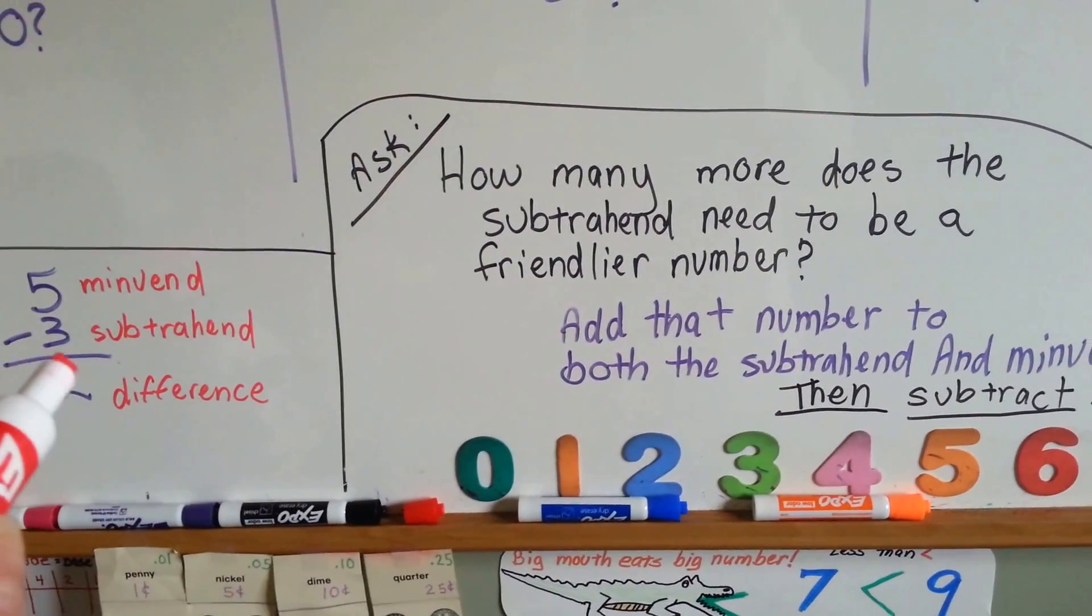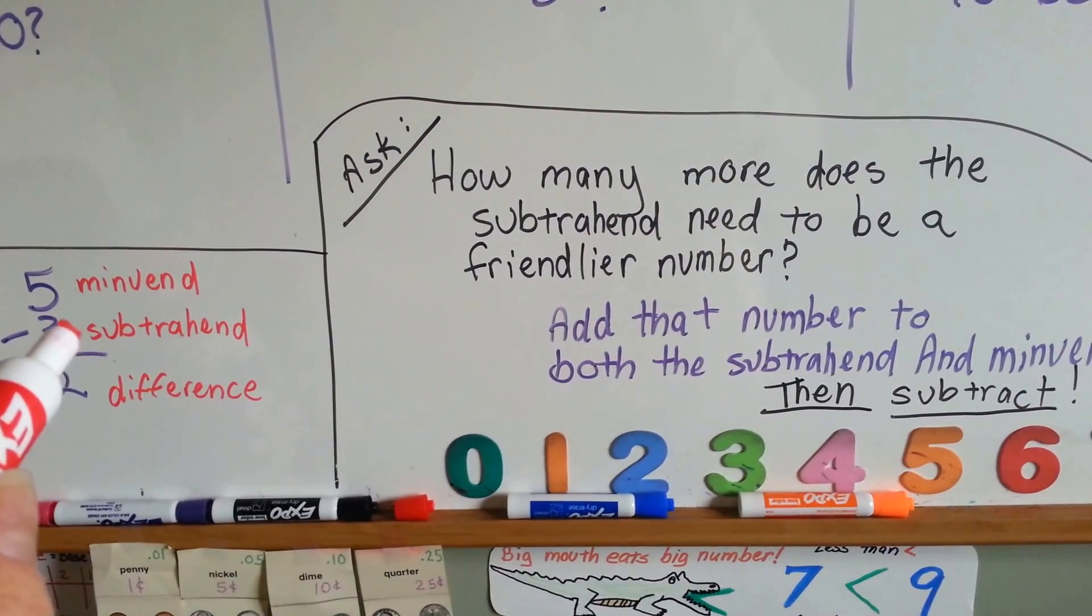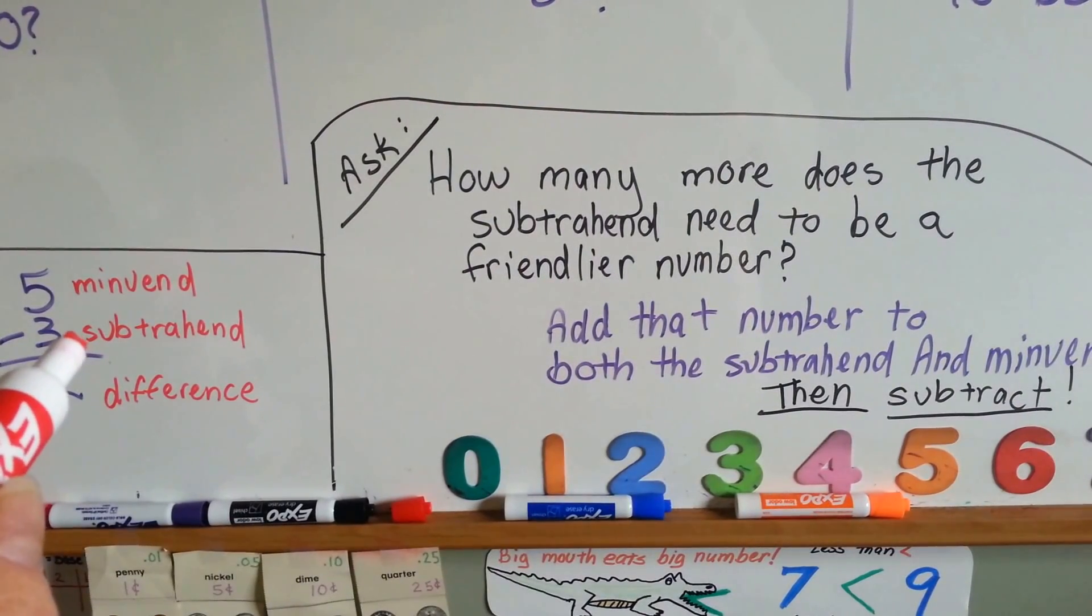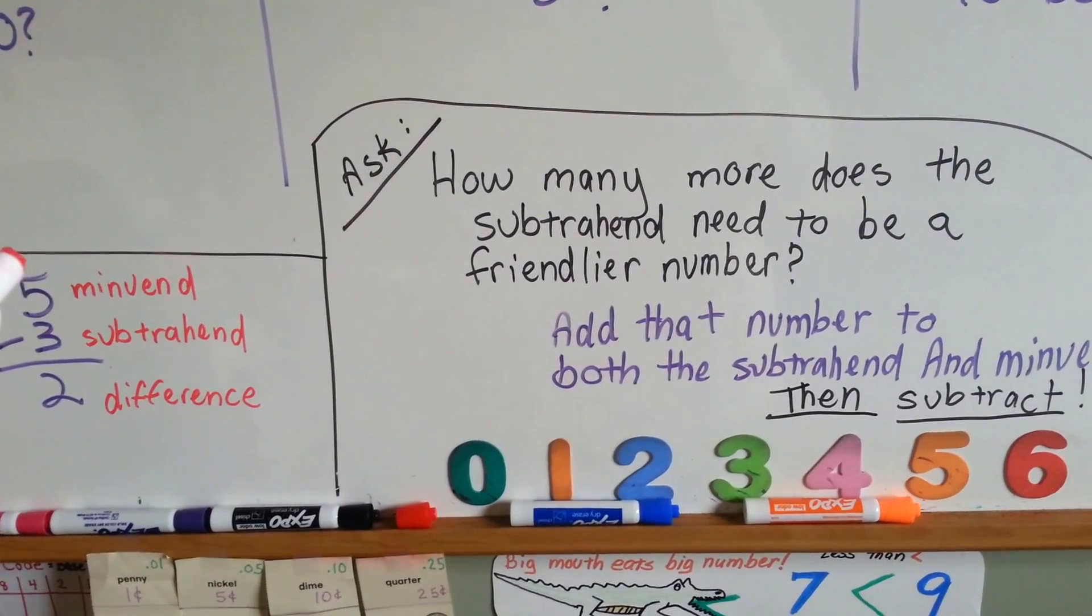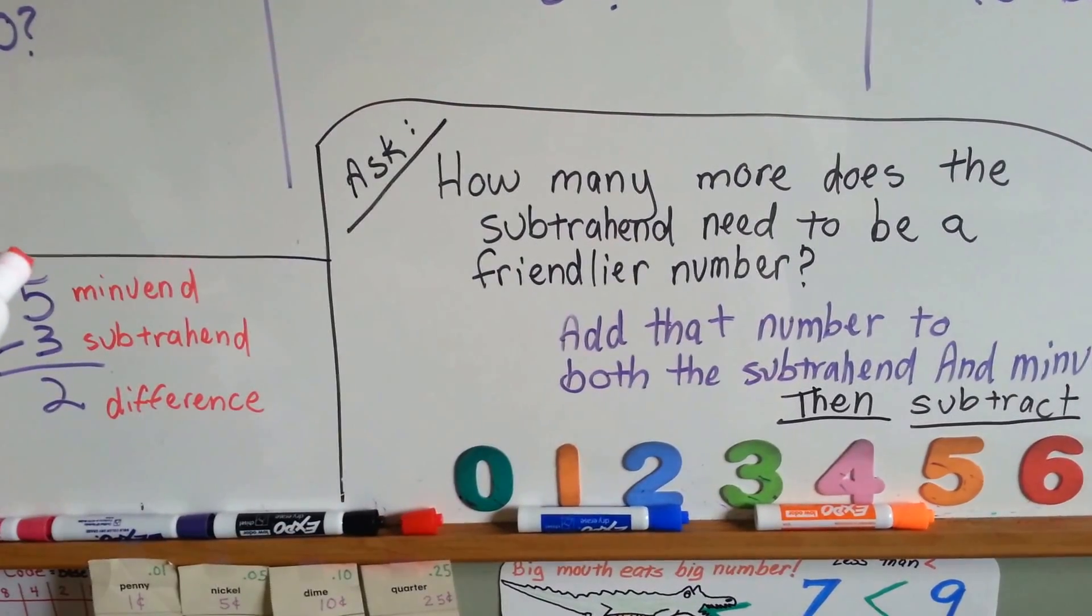So you find out what the subtrahend needs to be an easier, friendlier number. You add that amount to it, and then you add that amount to the minuend also because it's jealous. It wants the same amount. Then you do your subtraction.